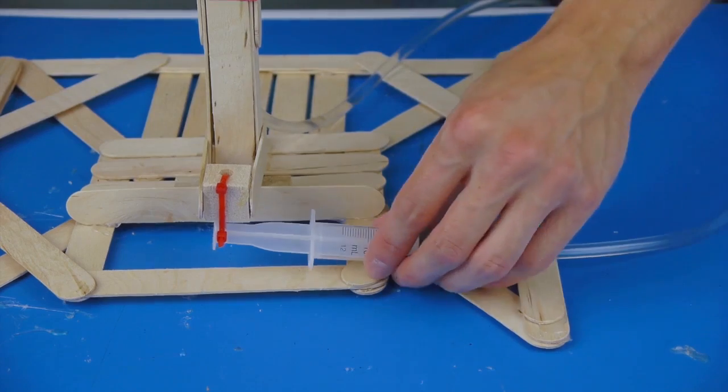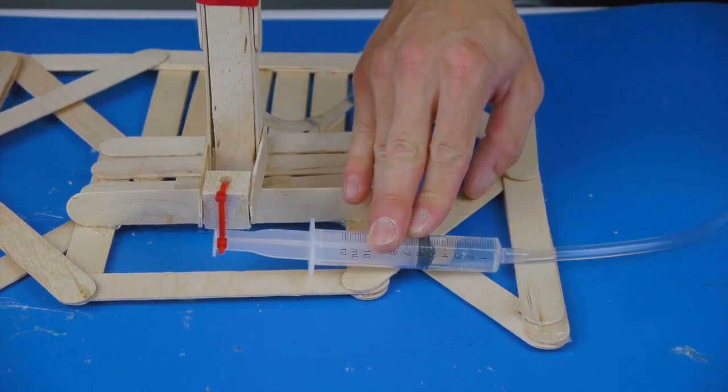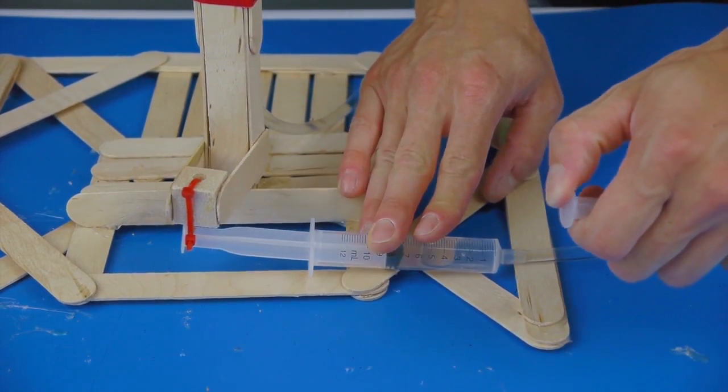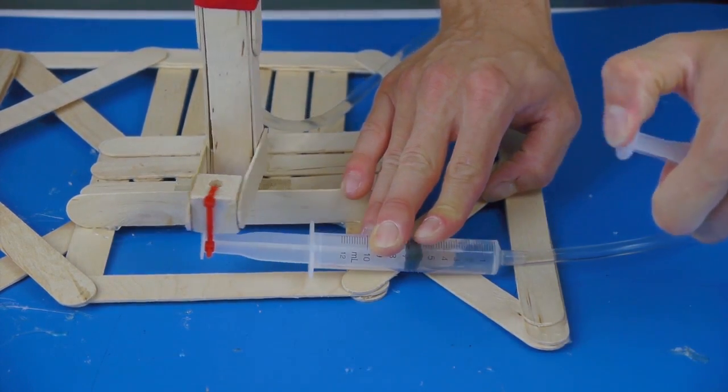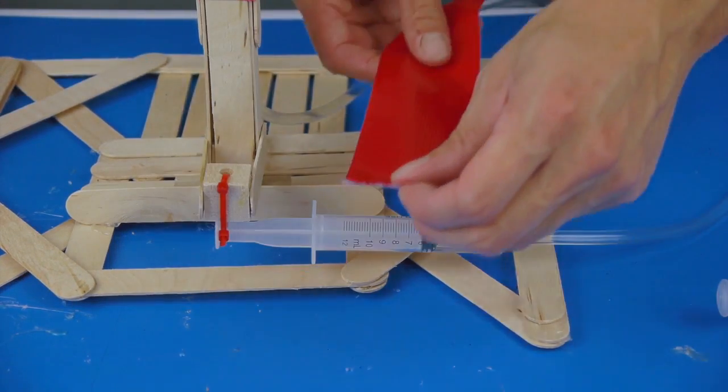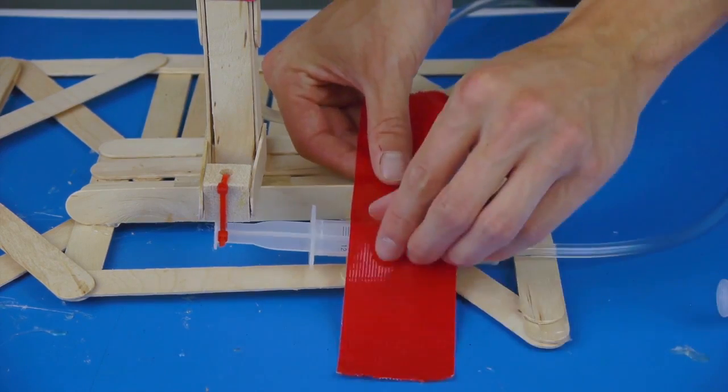Fill the syringe halfway with water, and point the fighting arm straight forward. Hold the syringe in place, and try it out. The fighting arm should move side to side in equal amounts. Strap the syringe to the base with another piece of duct tape.